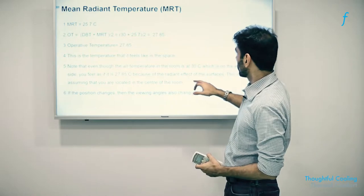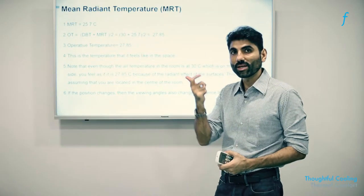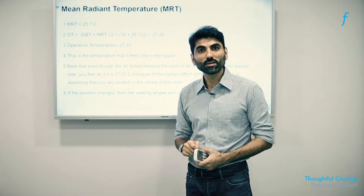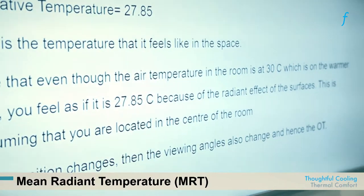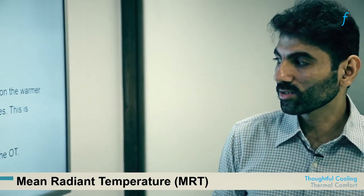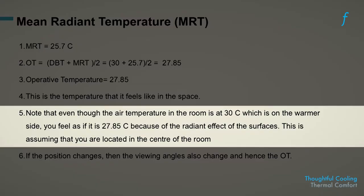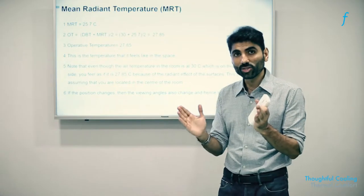This can be used very advantageously in air conditioning system design. For example, I can achieve an experienced temperature of 28°C by setting the air temperature at 30°C while keeping the walls at 26°C—the body feels the average of the two. This has direct energy conservation benefits. The position of the person in the space matters because it determines viewing angles and thus their experienced MRT.